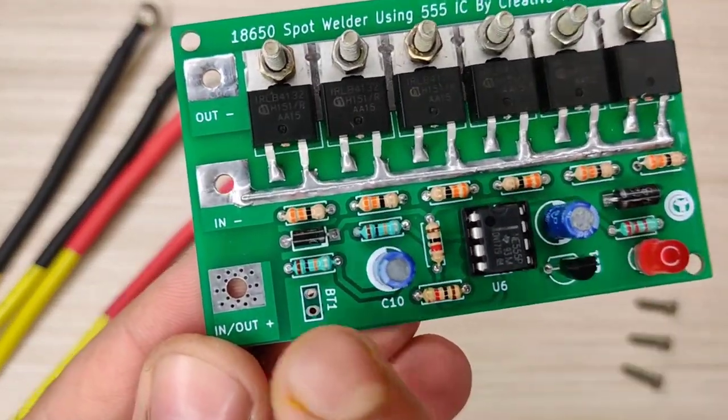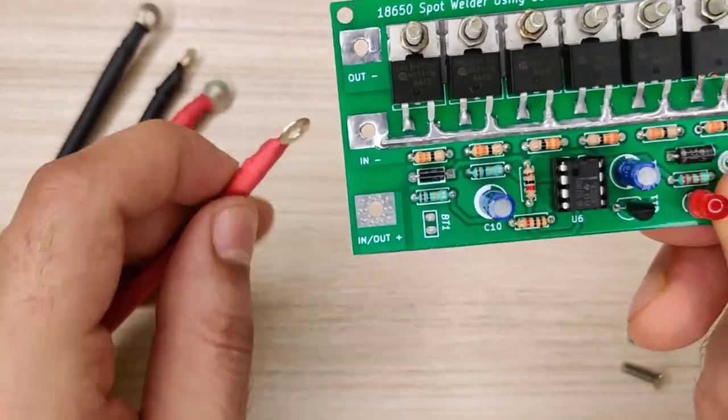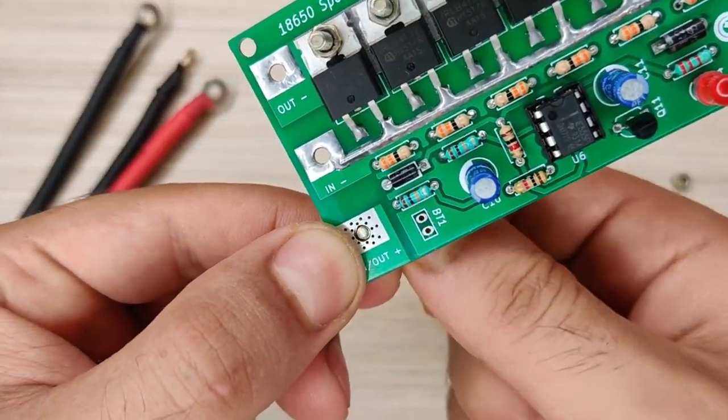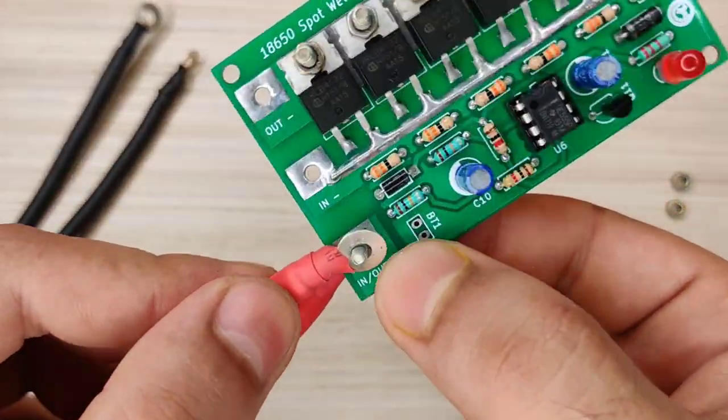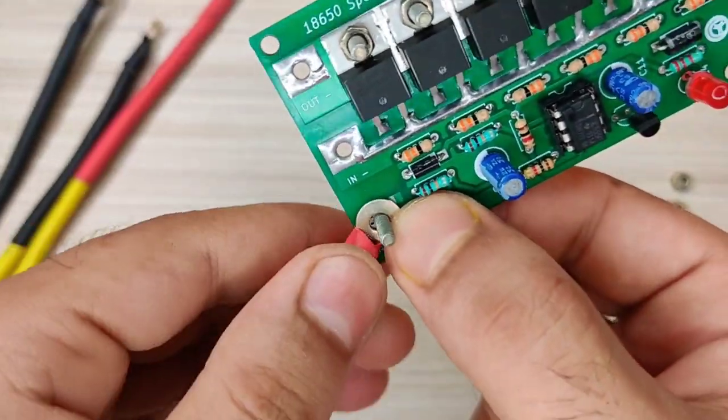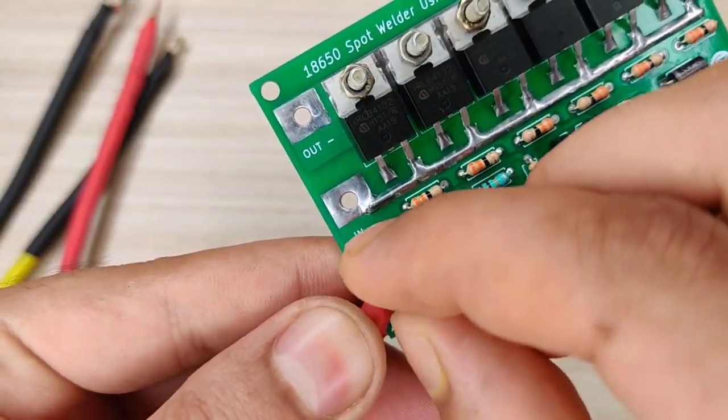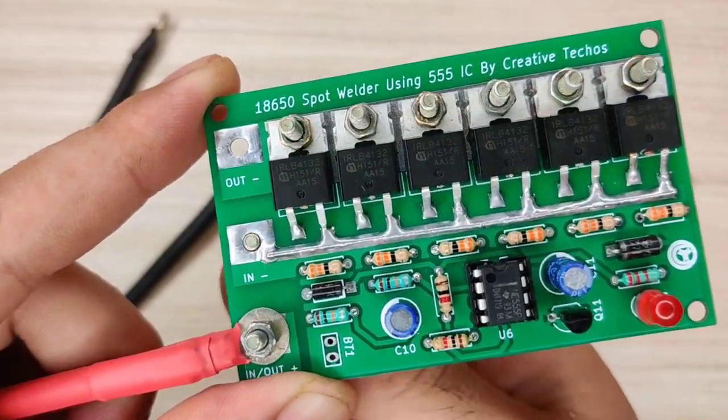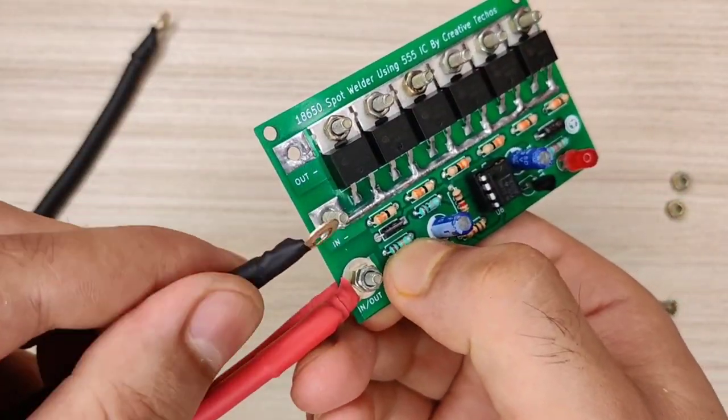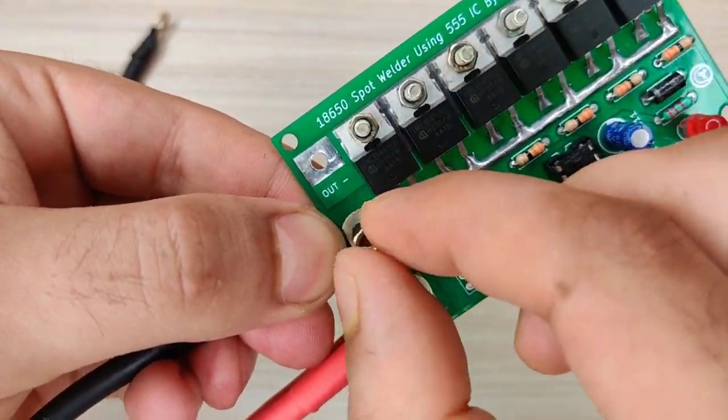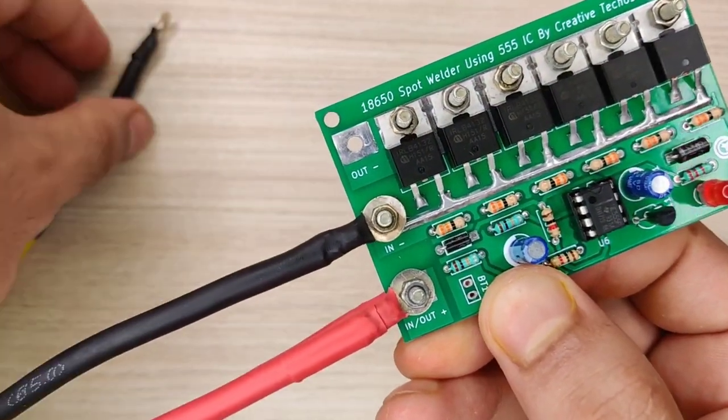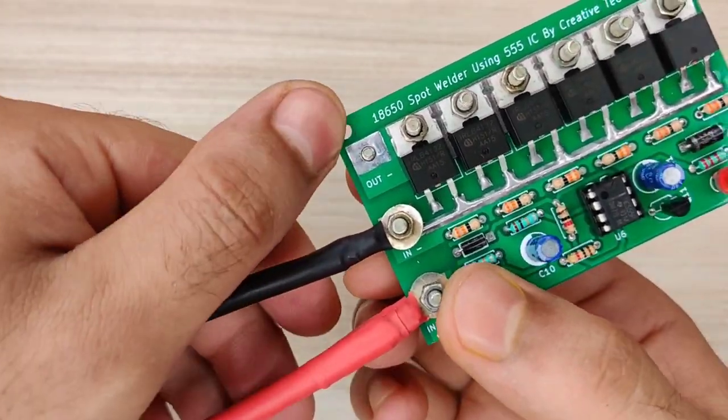Now it is time to connect cables with this PCB. Connect battery positive and welding probes positive here and secure with a nut bolt. Connect battery negative here and connect welding probes negative over here.